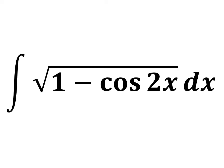In this video, we will solve the integral of square root of 1 minus cosine of 2 times x with respect to x by application of a trigonometry identity.